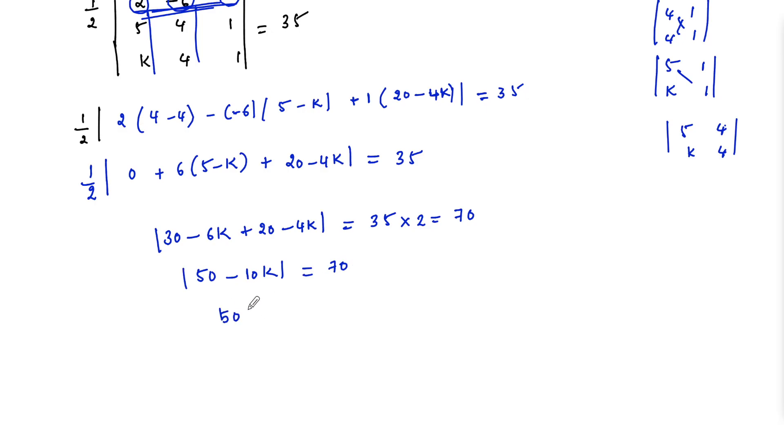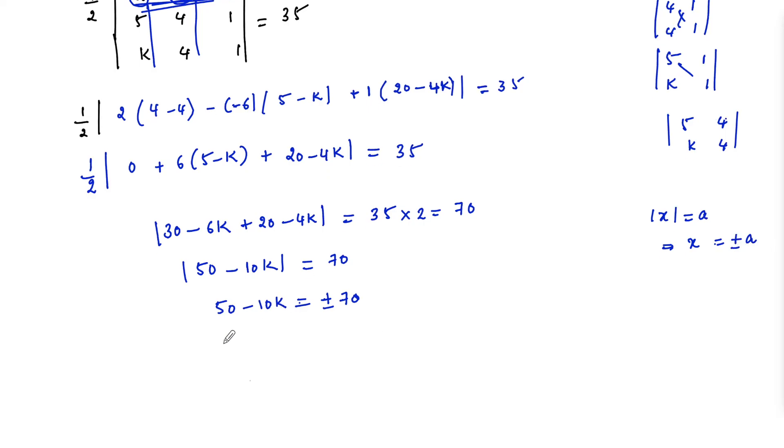Or we can write 50 minus 10k equals plus or minus 70, since we know that mod x equals a implies x equals plus or minus a.